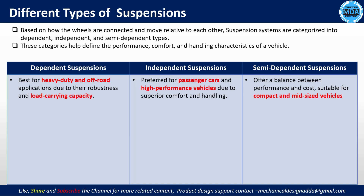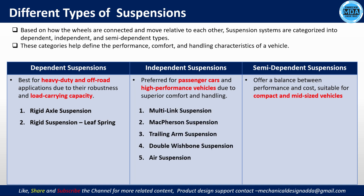Dependent suspension is suitable for heavy-duty and off-road applications due to high load capacity and robustness. Under dependent suspension, we have rigid axle suspension, with coil spring or leaf spring options. In dependent suspension, both wheels are dependent on each other. Independent suspension is preferred for passenger cars and high-performance vehicles. Types include multi-link, MacPherson, trailing arm, double wishbone, and air suspension.